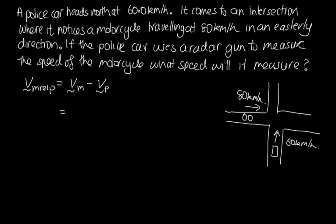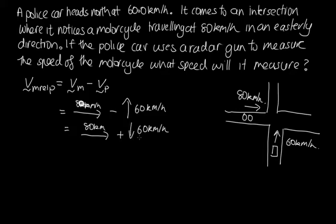And so when we're subtracting vectors like this, we've got 80 kilometres per hour as the velocity of the motorcycle minus the velocity of the police car, which is 60 kilometres per hour upwards. And so we can write this as 80 kilometres per hour towards the east plus 60 kilometres per hour towards the south. Because when we subtract a vector, we can reverse its direction and add it instead of subtracting it.